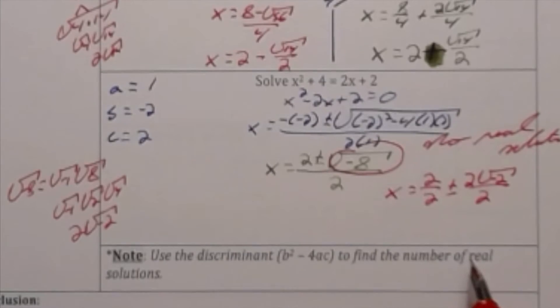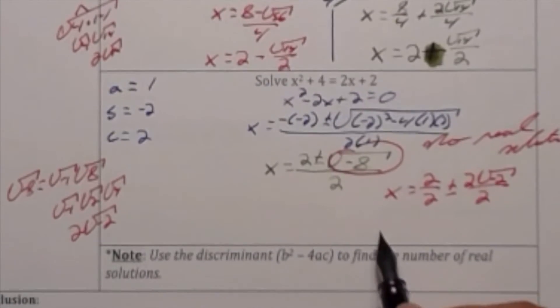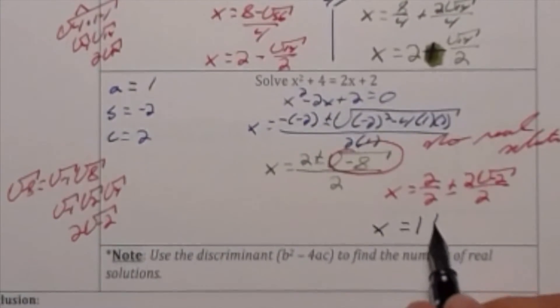If I simplify this, I get that x is equal to 1 plus or minus the square root of negative 2.